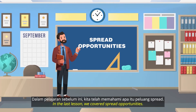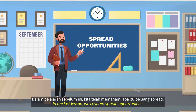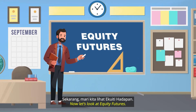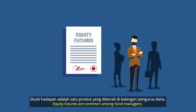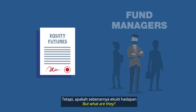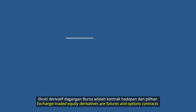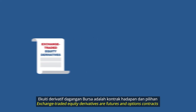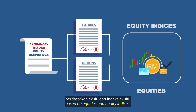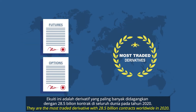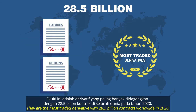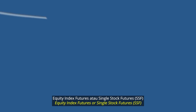In the last lesson we covered spread opportunities. Now let's look at equity futures. Equity futures are common among fund managers, but what are they and how do they work? Exchange-traded equity derivatives are futures and options contracts based on equities and equity indices. They are the most traded derivative, with 28.5 billion contracts worldwide in 2020.